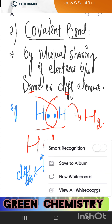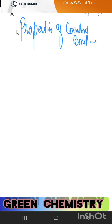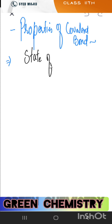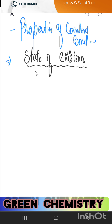Now let's move to the properties of covalent bonds, just as we studied the properties of ionic bonds. First property: state of existence. Covalent compounds do not exist as ions because there is no transfer of electrons. They do not exist in ionic form; instead, they exist as molecules. For ionic compounds we calculate formula mass units, while for covalent compounds we calculate molecular mass.